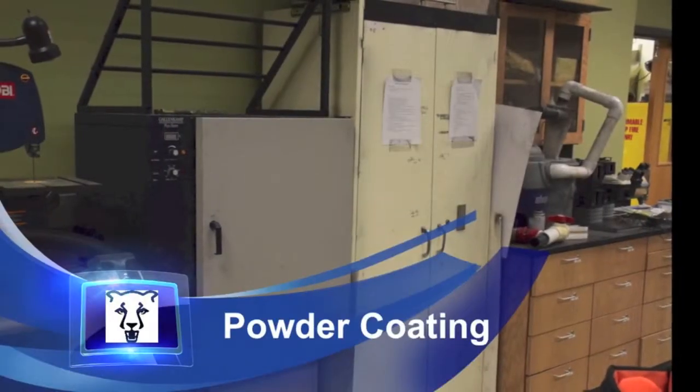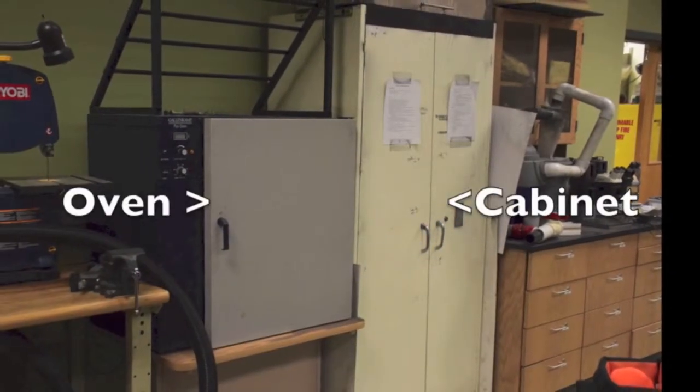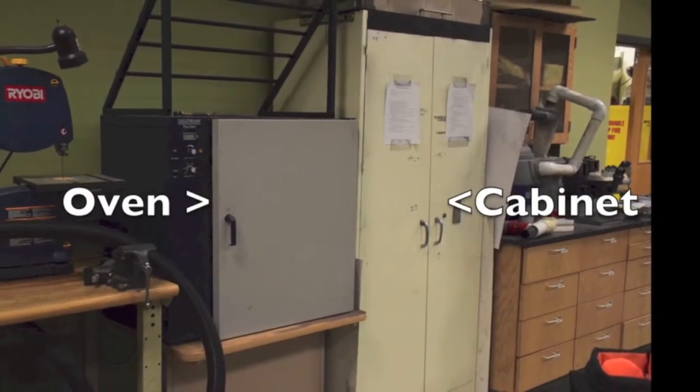Which brings us to the second half of this video, powder coating. The powder is sprayed on inside the cabinet and then baked on in the oven for the final finish.